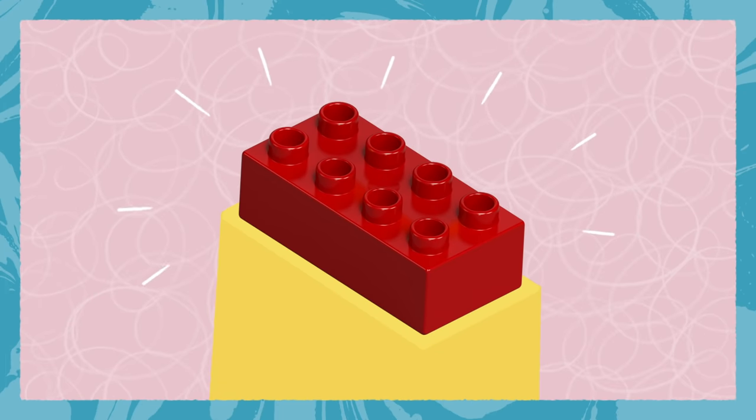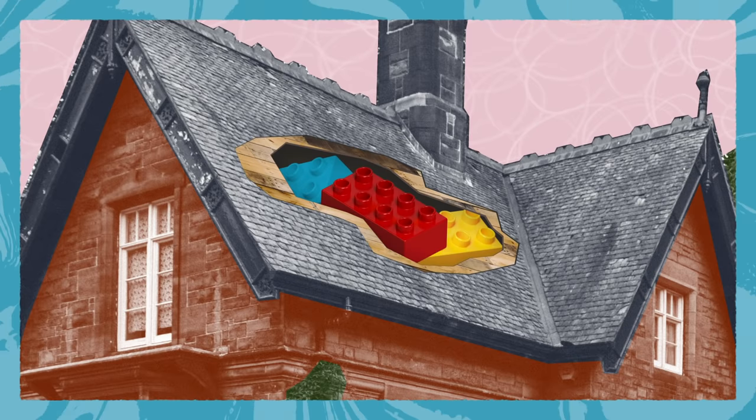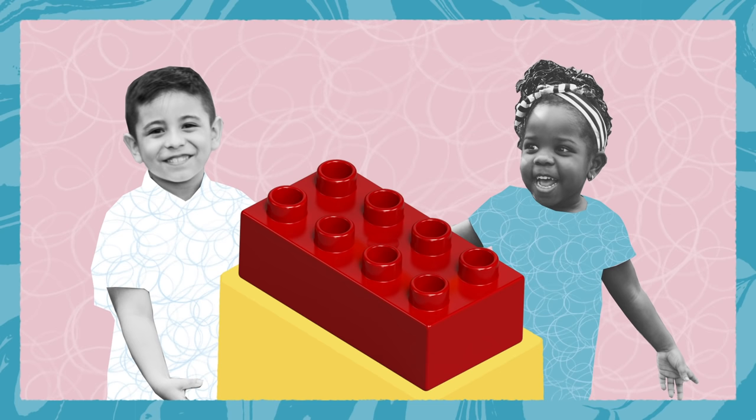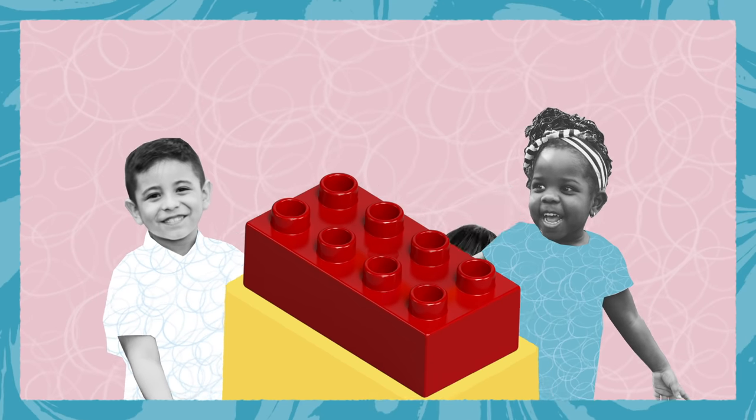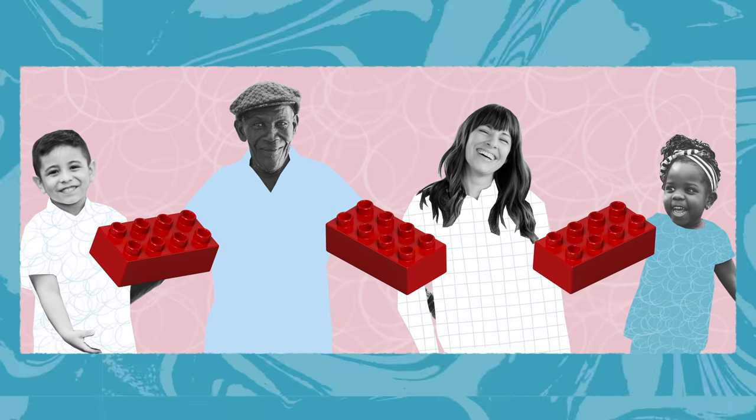This is a Duplo brick. You might remember it from your childhood. Some of these might still be tucked away in the attic at your parents' house. It's also very likely that your kids are playing with them right now in your living room. It's just one of those toys you never really get rid of. It stays with your family for generations.